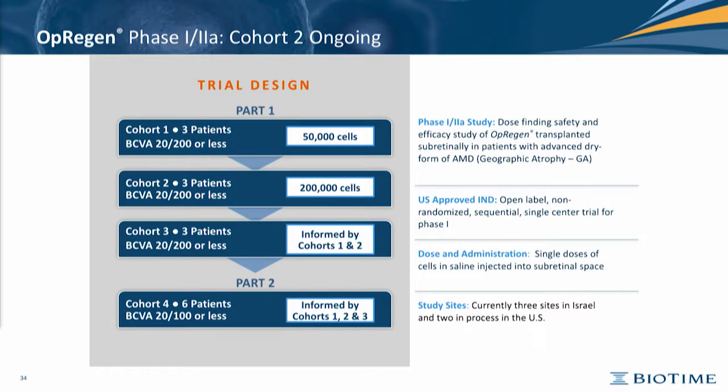Now I want to introduce the OpRegen trial. We started with the first cohort with 50,000 cells, injected in a 100 microliter volume in the subretinal space, usually located in the upper side of the geographic atrophy. Cohort 2 was followed with 200,000 cells injected with the same volume, and we have completed that.